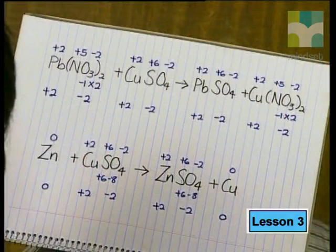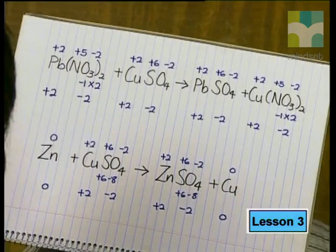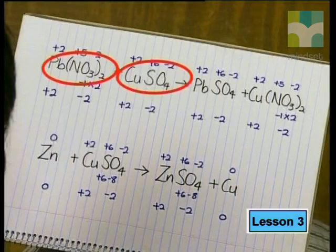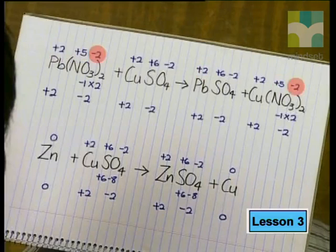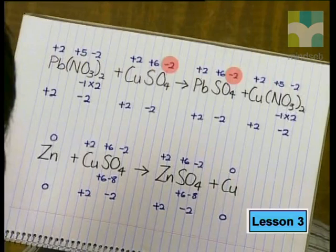Here are the answers. First, I assigned oxidation numbers using the rules we established in the previous lesson. For the reaction in the first beaker, where I added lead 2 nitrate to copper 2 sulfate, the oxidation numbers of the elements did not change. The arrangement of electrons in all the atoms remained the same.